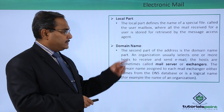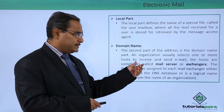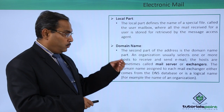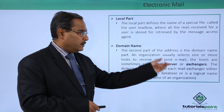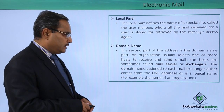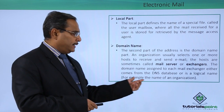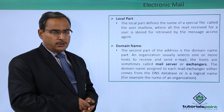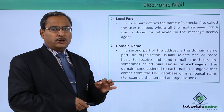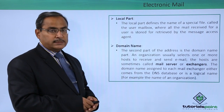The second part of the address is the domain name. An organization usually selects one or more hosts to receive and send email; these hosts are sometimes called the mail server or exchangers. The domain name assigned to each mail exchanger either comes from the DNS database or is a logical name, such as the name of an organization. For example, in an address like abcd@mnop.com, mnop.com is the domain name and abcd is the local part.